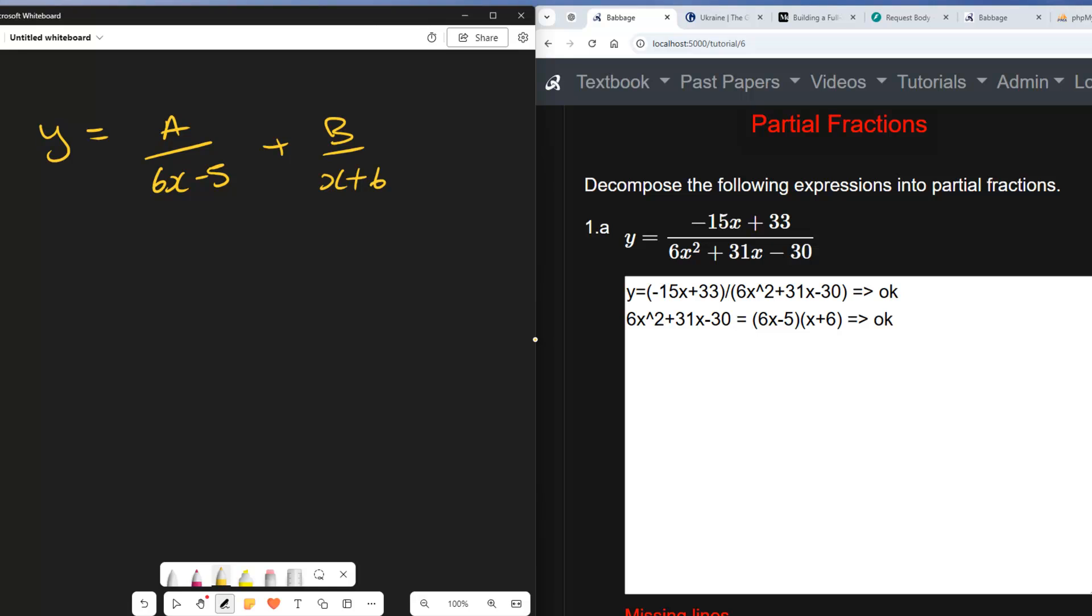Now I'd like to put the right hand side over a common denominator. So I'm going to multiply the first term by (x + 6)/(x + 6), and I'm going to multiply the second term by (6x - 5)/(6x - 5). Which means that I can write that that is equal to A(x + 6) + B(6x - 5), and that is all over (6x - 5)(x + 6).